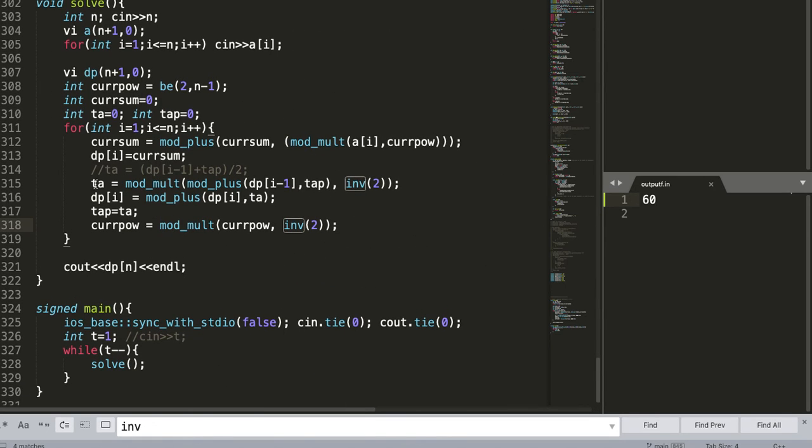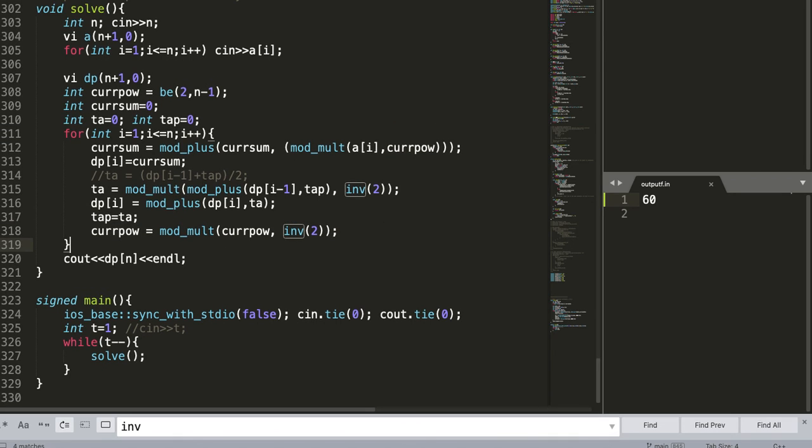Once 2_add is found, we add 2_add to dp[i]. We set 2_add_prev to 2_add, and decrease current_power because that will be useful in the next iteration. Finally, we report the value of dp[n].